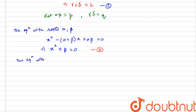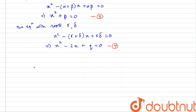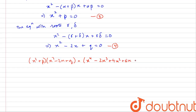The other quadratic equation with roots gamma and delta will be x squared minus the sum of roots times x plus the product of the two roots, gamma delta, equals 0. We know gamma plus delta is equal to 2, and gamma delta equals Q. So this becomes x squared minus 2x plus Q equals 0. Let us call this equation number 4. These are the two quadratic equations whose product will give us the required equation, so we multiply equation 3 and equation 4: x squared plus P, multiplied by x squared minus 2x plus Q, equals 0. This will also be equal to our given equation x to the power 4 minus 2x cubed plus 4x squared plus 6x minus 21.